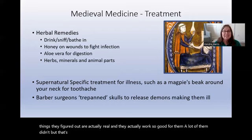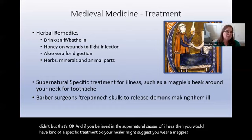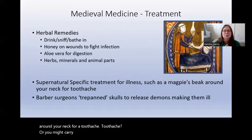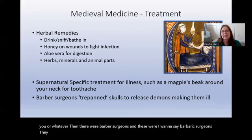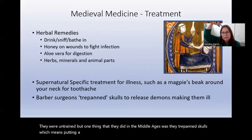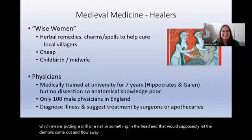If you believed in supernatural causes of illness, your healer might suggest you wear a magpie's beak around your neck for a toothache, or carry a bag of herbs for healing. Then there were barber surgeons — untrained people. One practice in the Middle Ages was trepanning skulls — putting a drill or nail into the head — which supposedly let the demons flow out. Glad I don't live in those times.